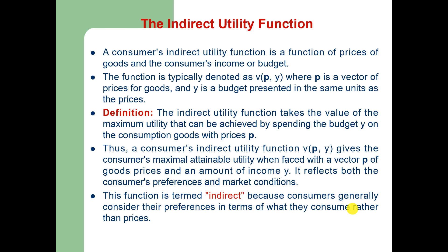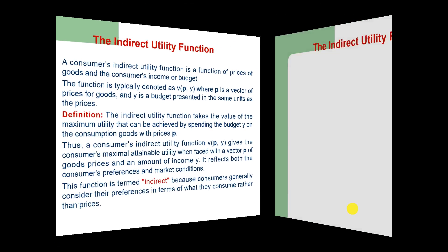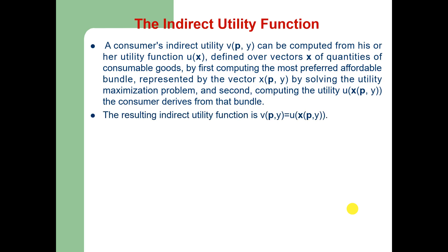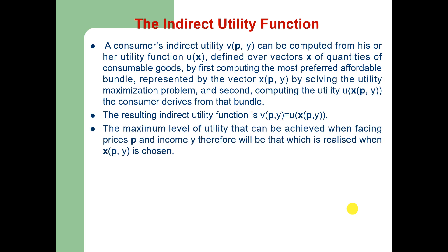The function is termed indirect because consumers generally consider their preferences in terms of what they consume rather than prices, and it reflects both consumer preferences and market conditions. A consumer's indirect utility can be computed by: first, computing the most preferred affordable bundle X by solving the utility maximization problem; and second, computing the utility U of X of P and Y the consumer derives from that bundle. The resulting indirect utility function equals U of X where X is a function of the vector P of prices and income Y.